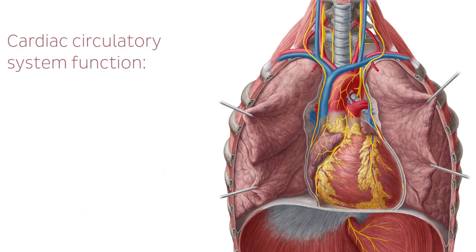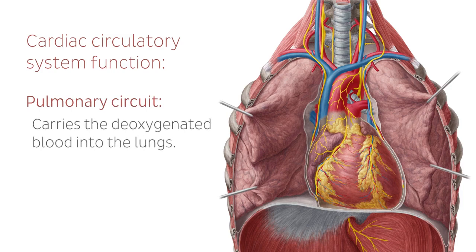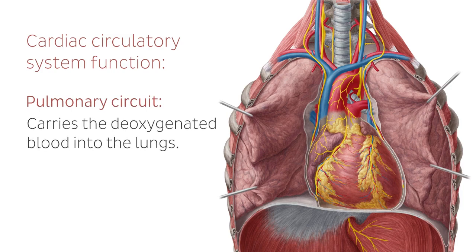The cardiac circulatory system functions by providing the tissues of the body with oxygen and nutrients, which are transported in the blood. The pulmonary circuit carries the deoxygenated blood into the lungs, where the exchange of oxygen and carbon dioxide that the body has produced occurs before the blood returns back to the heart.